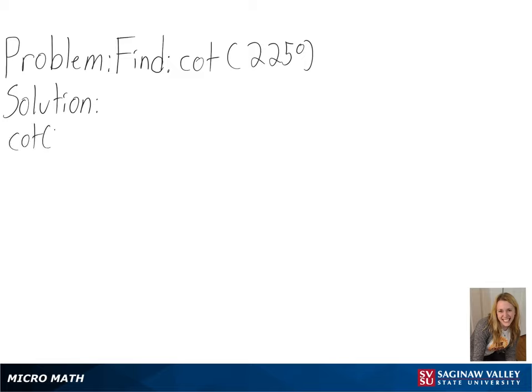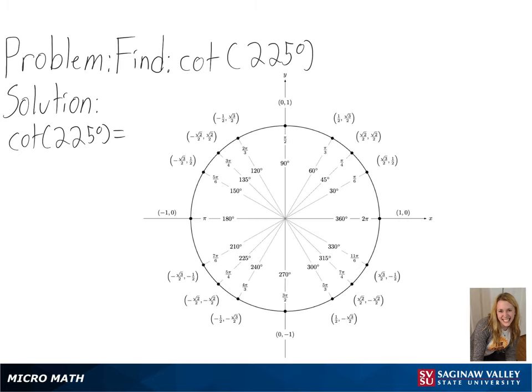Our problem is to find cotangent of 225 degrees. To solve this, we will be using a unit circle. So we will start at 0 and then move counterclockwise until we have rotated 225 degrees.